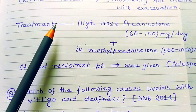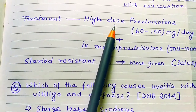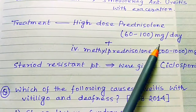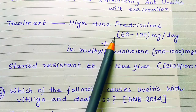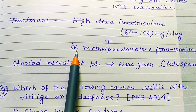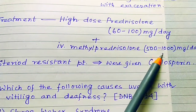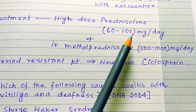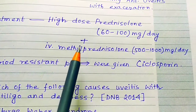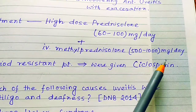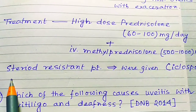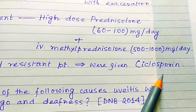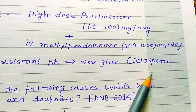Treatment is high dose prednisolone of 60 to 100 mg per day, along with IV methylprednisolone of 500 to 1000 mg per day. For steroid-resistant patients, we give cyclosporine.